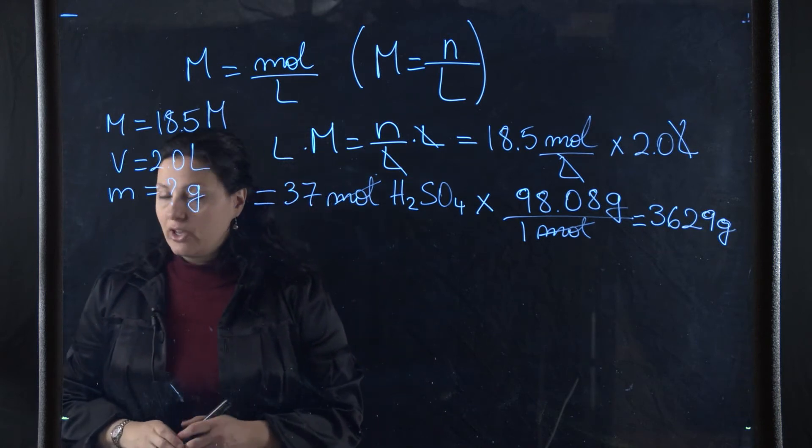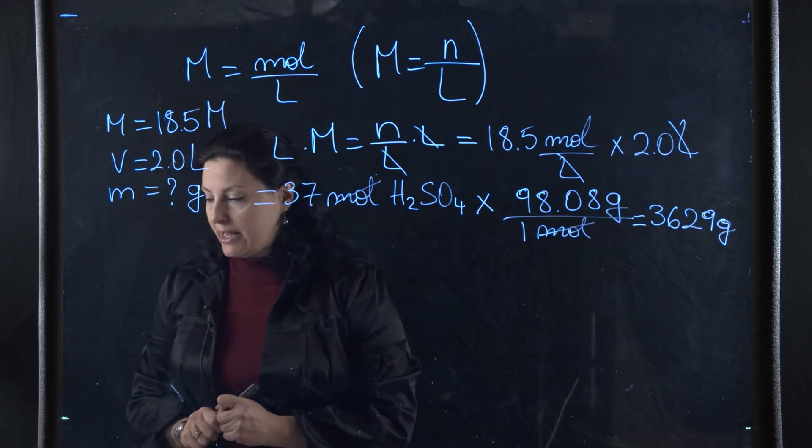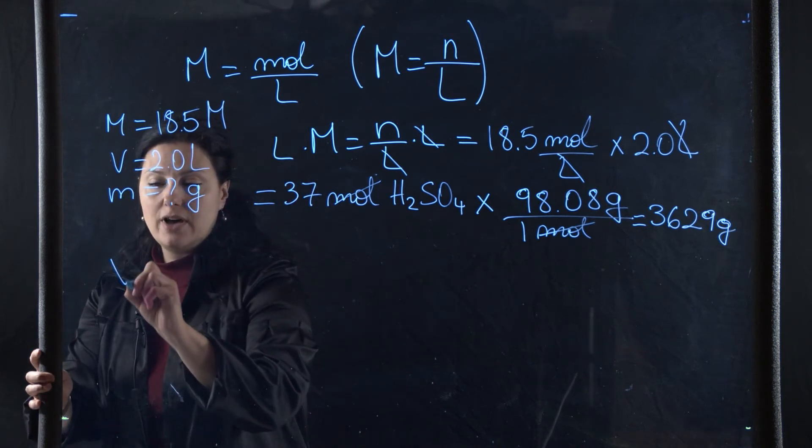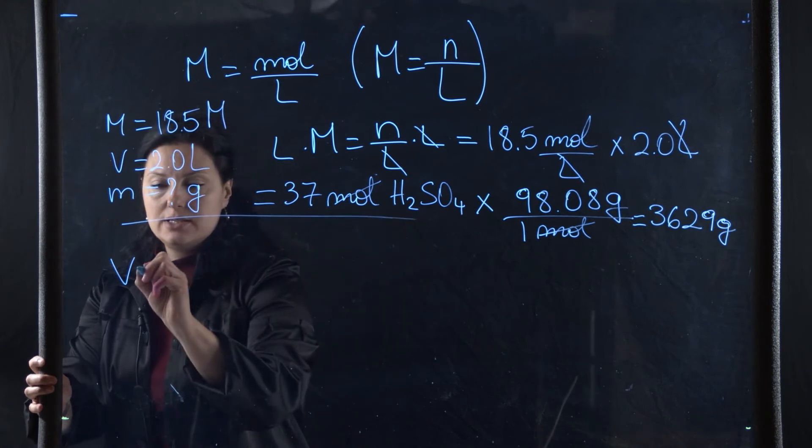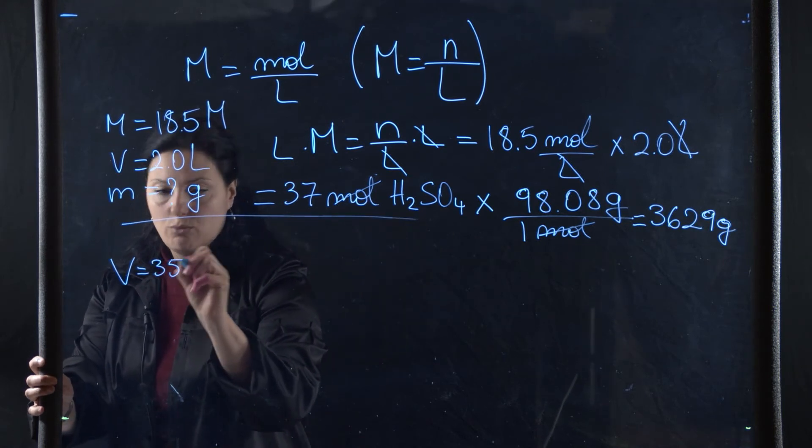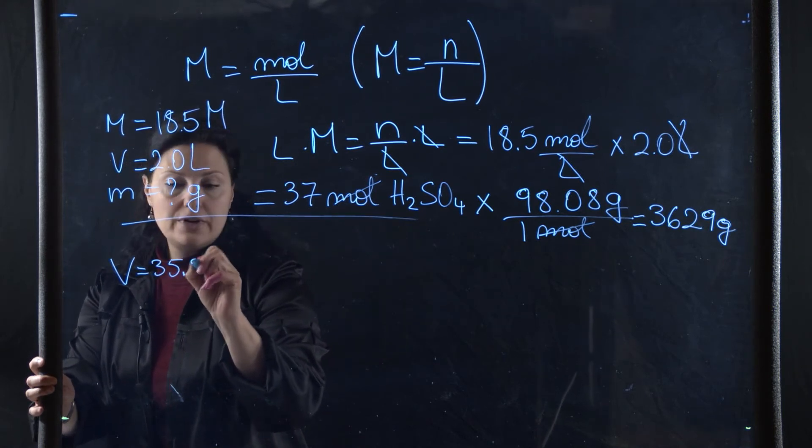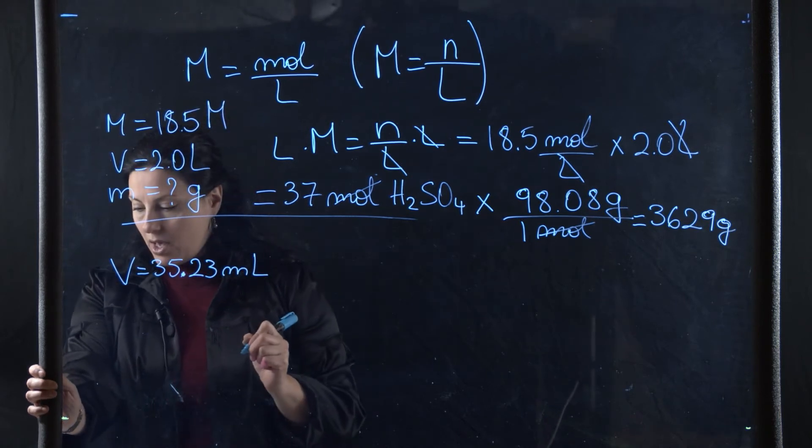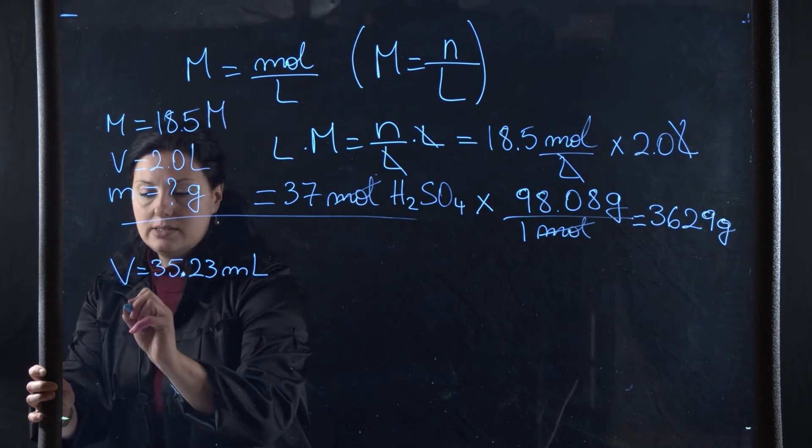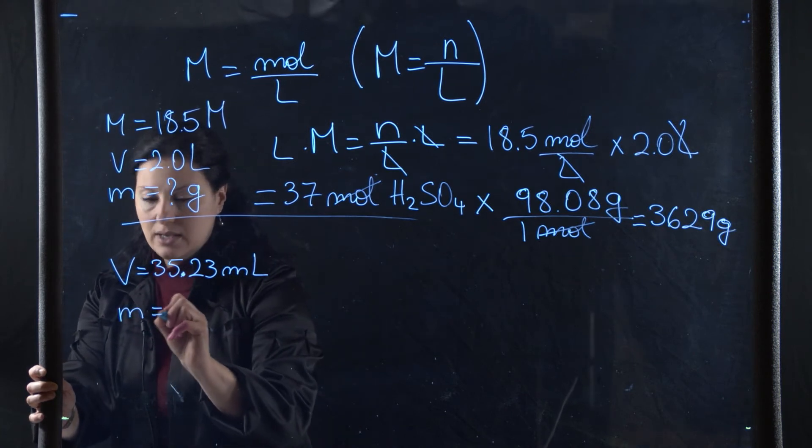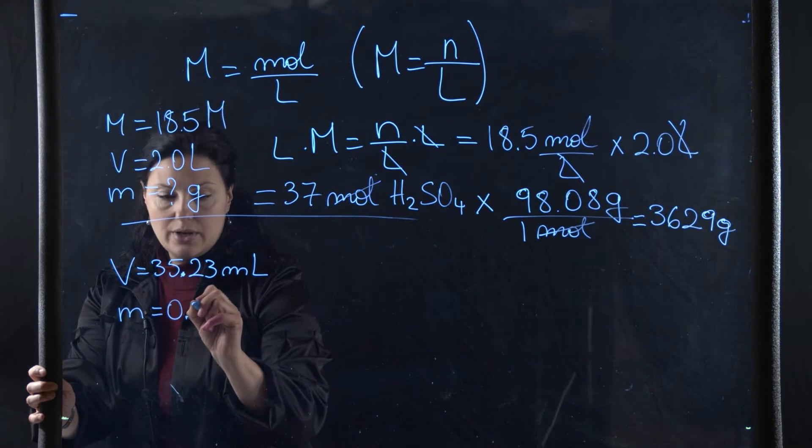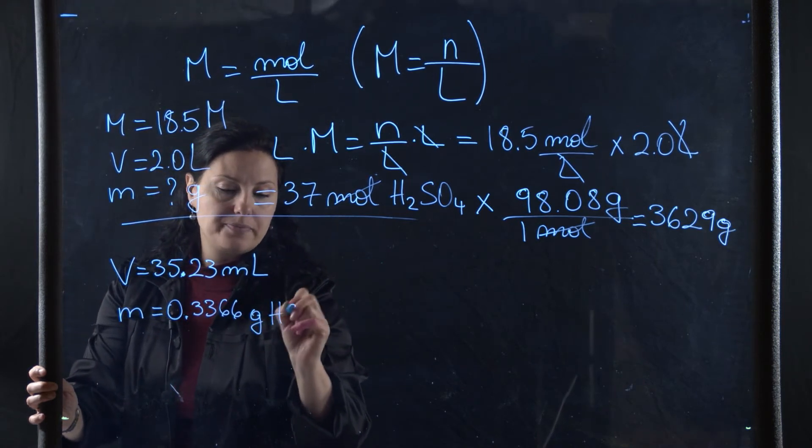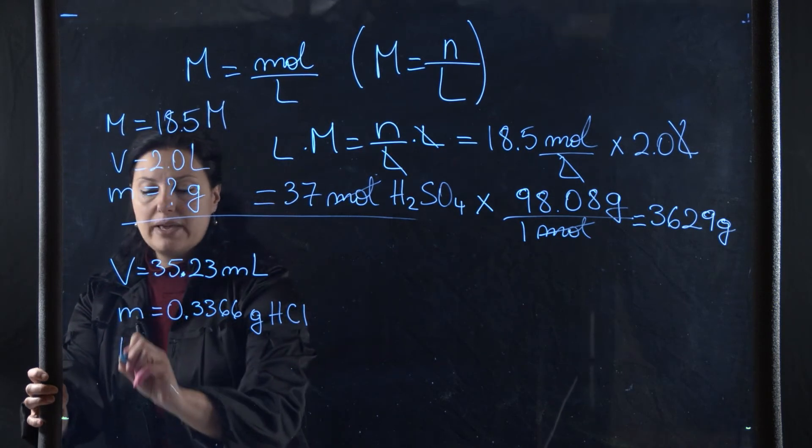Let's take a look at the last problem in this slide. What is the molarity of HCl if 35.23 milliliters contain 0.3366 grams of HCl? So my volume is 35.23 milliliters and my mass is 0.3366 grams of HCl. What is the molarity?